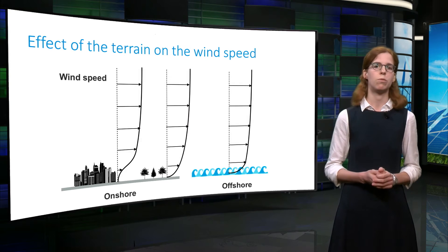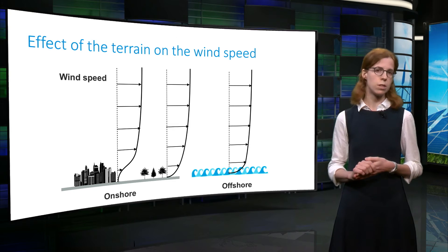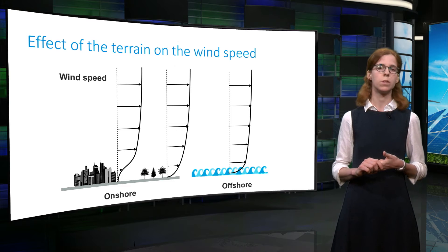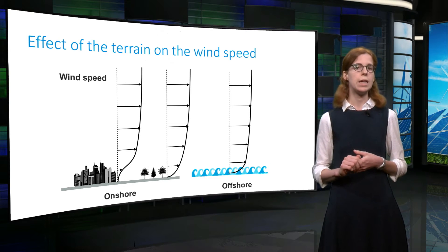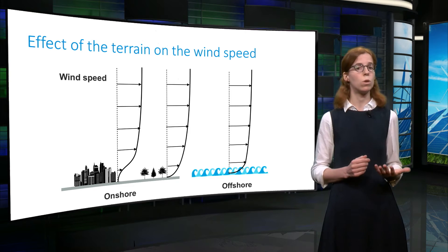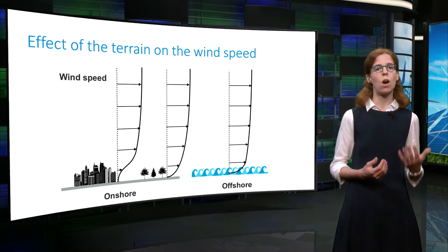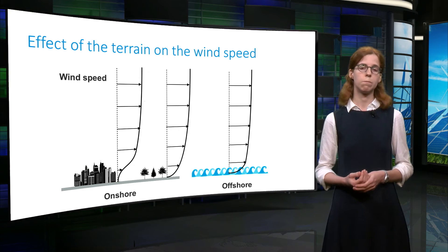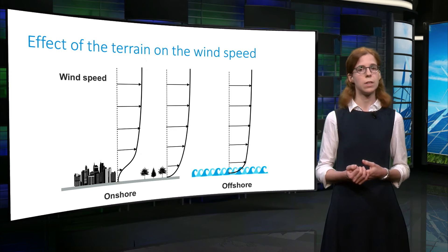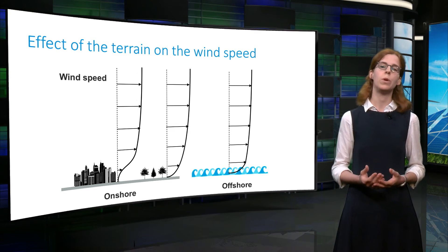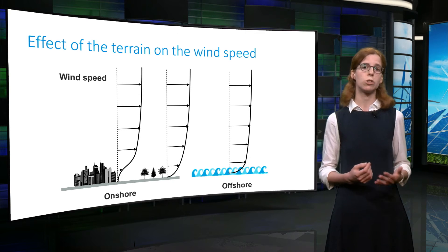So we have seen how local topography influences global and local recirculation of air. This slide illustrates some typical wind velocity profiles as a function of altitude. The wind velocity increases from zero at the ground to a certain value in the atmosphere. The exact shape of the profile depends on the local topography. Above sea, the increase will be much steeper, meaning that offshore, the wind speed is more uniform with altitude. By contrast, in urban areas, the presence of buildings and trees will slow down the wind, so the wind speed reaches a fairly constant value at a much higher altitude than offshore. In short, offshore wind turbines generally benefit from much stronger and more uniform winds.